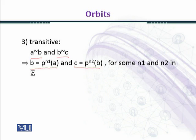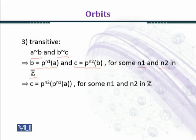Here P is the permutation. When permutation P acts on A, n1 times, we get B as the image, and when permutation P acts on B, n2 times, we get C as the image, for some n1 and n2 in the set of integers. In this way we shall get C equal to P^n2 applied to P^n1(A).